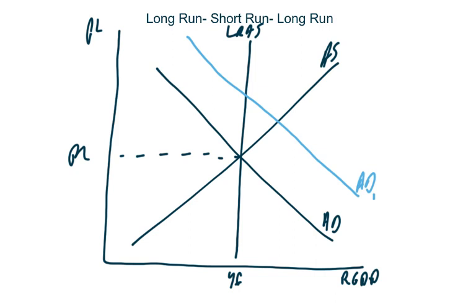Because as you can tell, prices are high, people are going to demand raises, and as people get raises, that means resource prices are going up. If resource prices go up, that means aggregate supply is going to decrease.